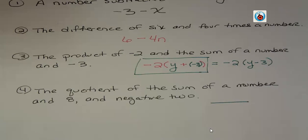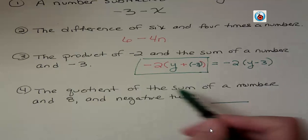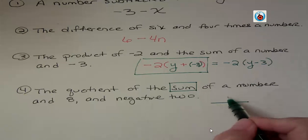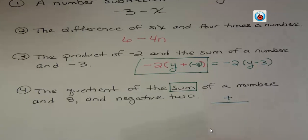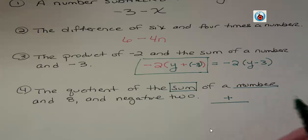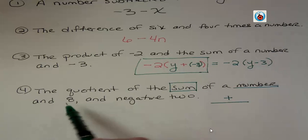There's two things involved here. We have a sum and that's stated first. So I know I'm going to have a sum on the top. And so the first thing I want to do is figure out what is part of my sum. Well, I have a number and eight.